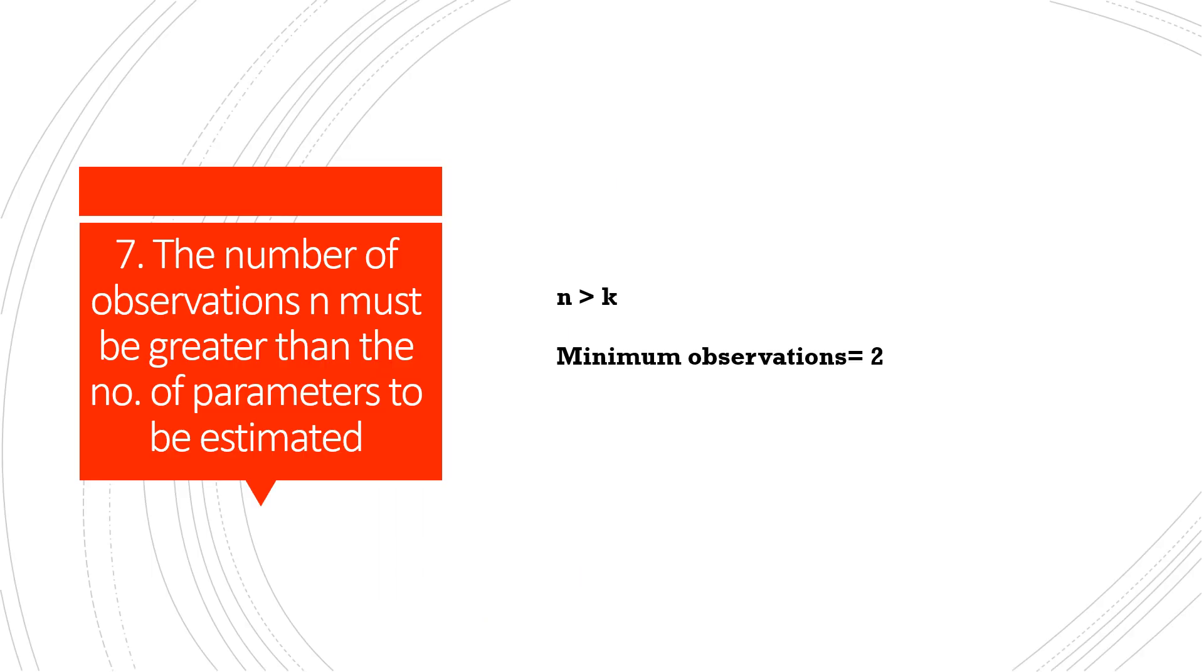The seventh assumption says that the number of observations n must be greater than the number of parameters k to be estimated. So it is very obvious to say that at least we should have two minimum observations to estimate the parameters.